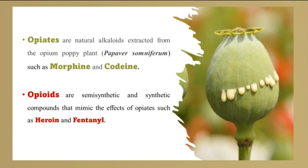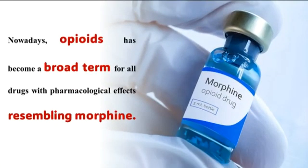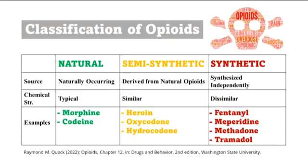Opiates are natural alkaloids extracted from the opium poppy plant, Papaver somniferum, such as morphine and codeine, while opioids are semi-synthetic and synthetic compounds that mimic the effects of opiates, such as heroin and fentanyl. Nowadays, the term opioids has become a broad term for all drugs with pharmacological effects resembling morphine. Opioids are classified into natural, semi-synthetic, and synthetic opioids — natural opioids like morphine and codeine, semi-synthetic opioids like heroin, oxycodone, and hydrocodone, and synthetic opioids such as fentanyl, meperidine, methadone, and tramadol.